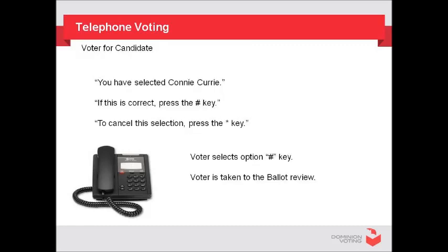You have selected Connie Curry. If this is correct, press the pound key. To cancel this selection, press the star key. The voter selects the pound key and is taken to the ballot review.